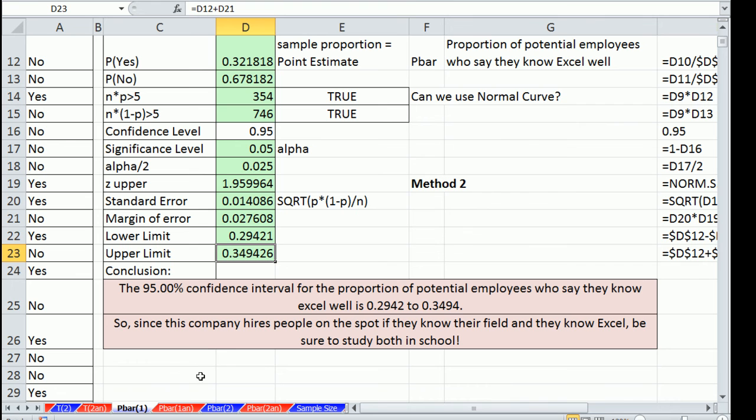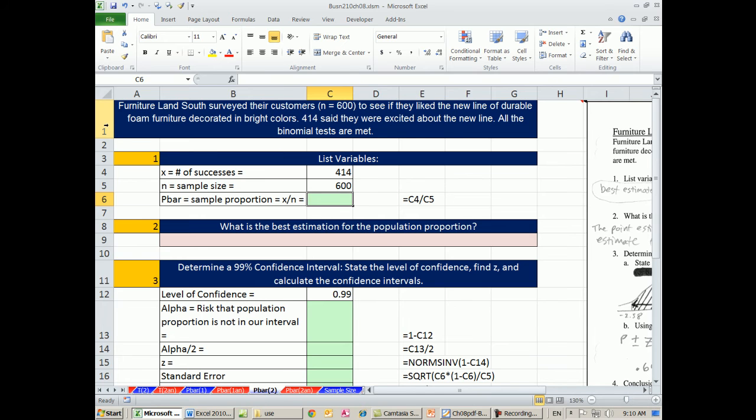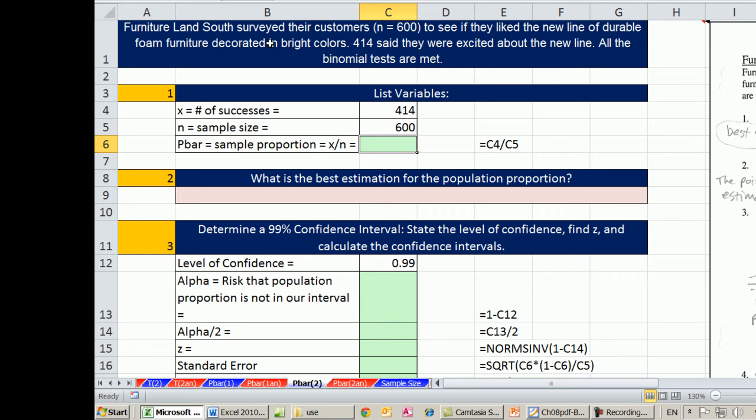Let's go look at a second example. Go over to p bar 2. So here's our second example. Furniture Land South surveyed their customers, n equals 600. That was a sample size. To see if they like the new line of durable foam furniture decorated in bright colors. 414 said they were excited about the new line. All the binomial tests are met. All right, so our variables. We have x number of successes. That is, we like it.